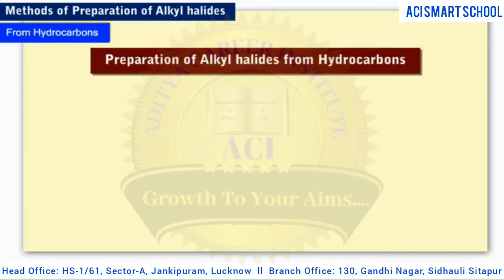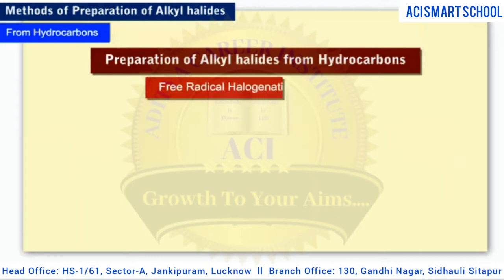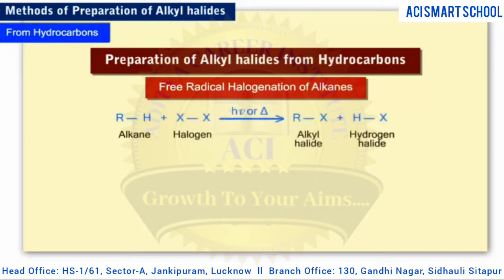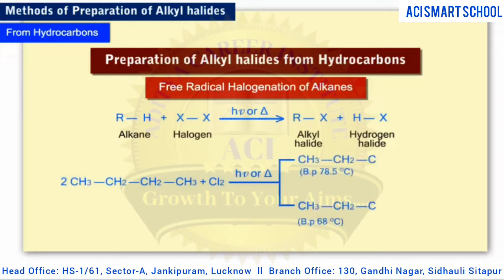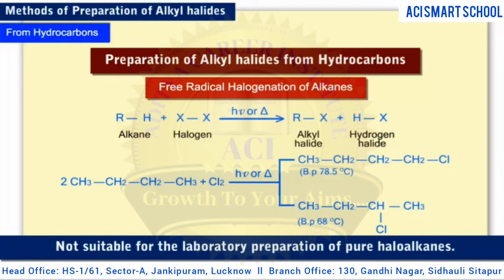Alkyl halides can also be prepared by free radical halogenation of alkanes. The general equation is shown here — you can think of it as the substitution of a hydrogen atom by a halogen atom. The free radical chlorination or bromination of alkanes gives a mixture of isomeric mono and polyhaloalkanes, which is difficult to separate as pure compounds. Hence, this method is not suitable for the laboratory preparation of pure haloalkanes.